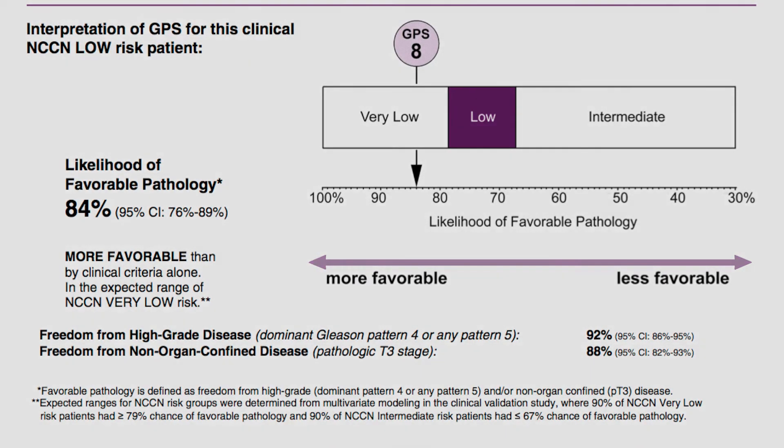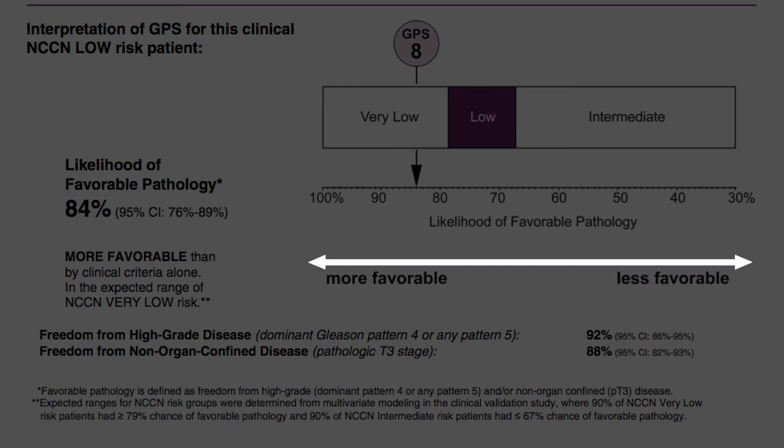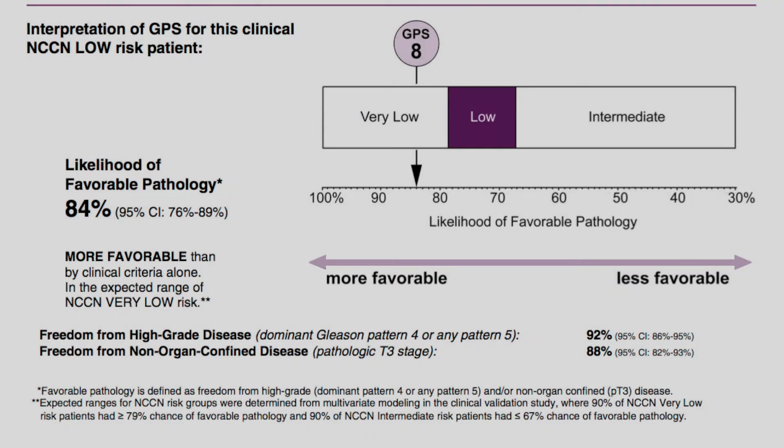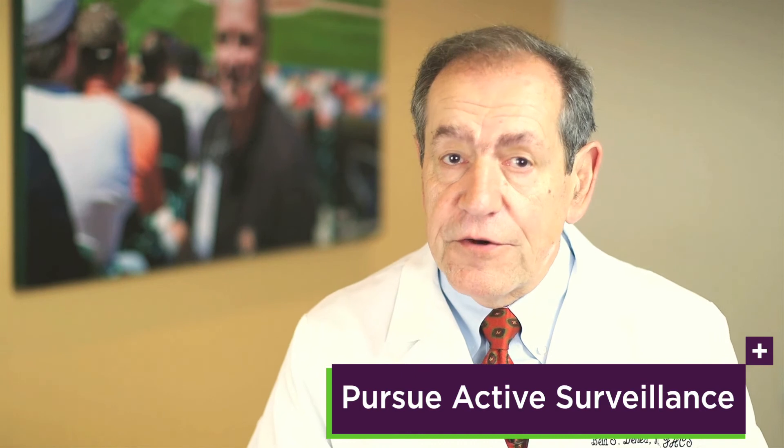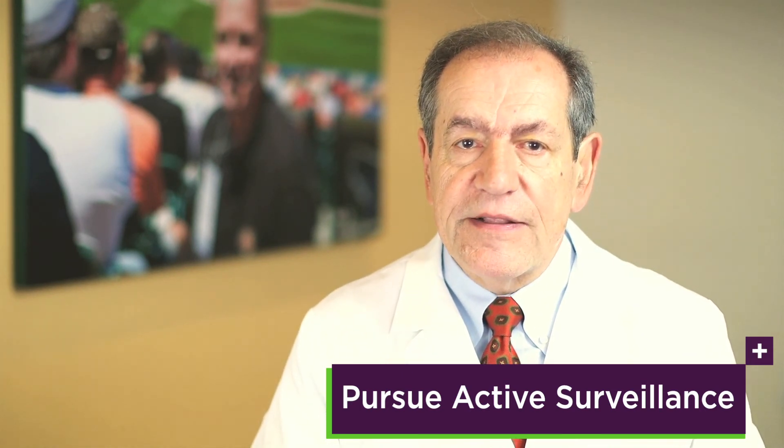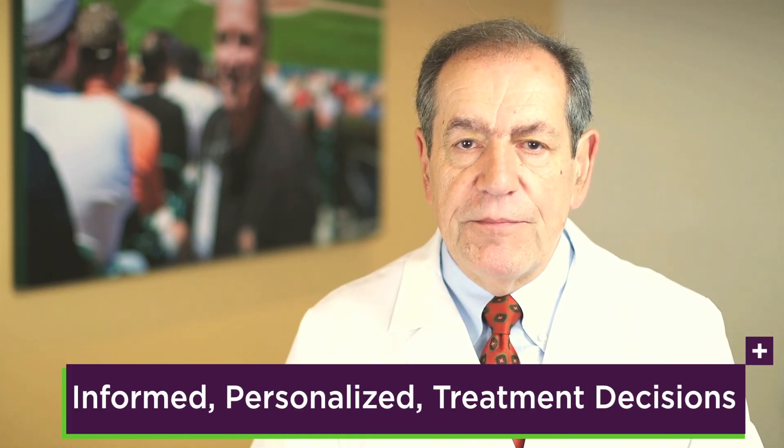It is important to note that the risk falls on a continuum, and individual men and their doctors will have different thresholds for decision-making. For many men, the finding of a low GPS result and consequently a predicted likelihood of favorable pathology in the range of very low risk may enable a decision to pursue a program of active surveillance. For others, confirmation that the tumor does not harbor unexpectedly high-risk disease may be enough to choose active surveillance confidently. Ultimately, the new approach to a more accurate risk assessment based on an understanding of individual tumor biology should provide the critical information and certainty to make informed personalized treatment decisions.